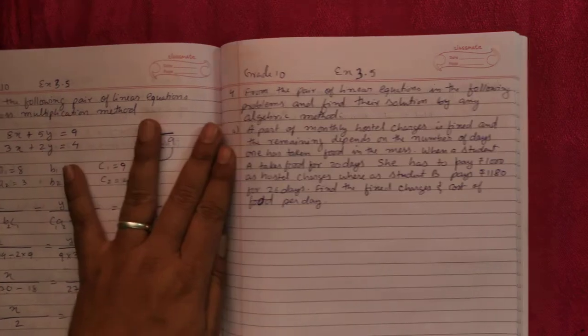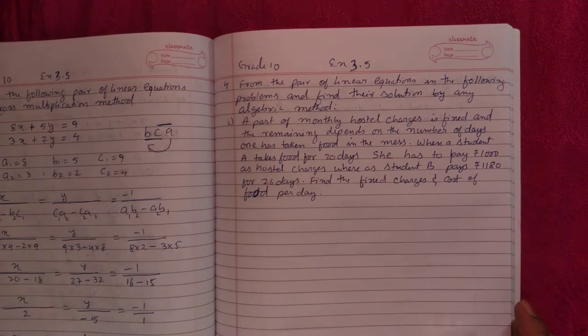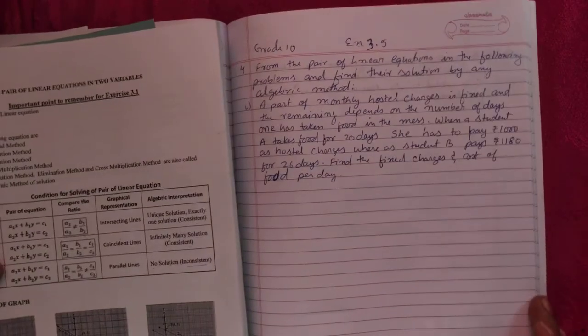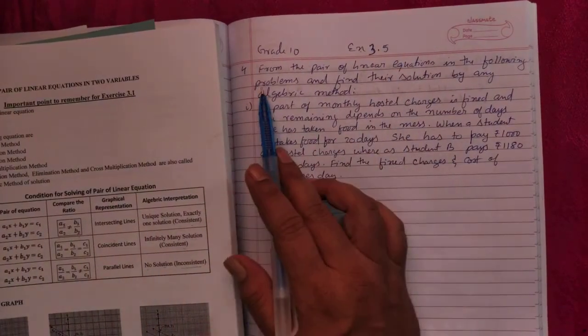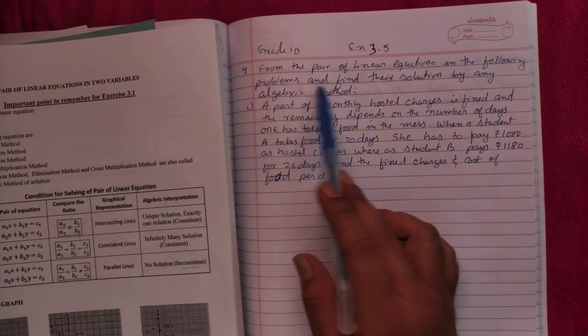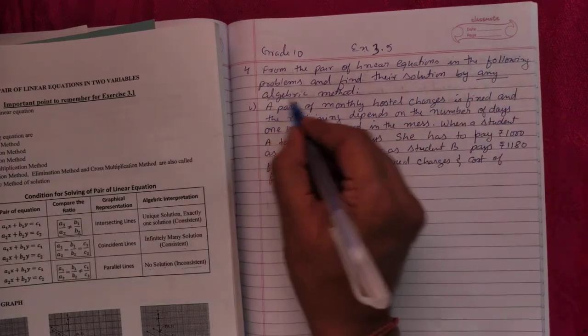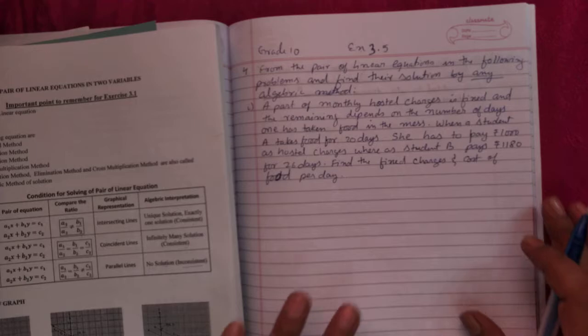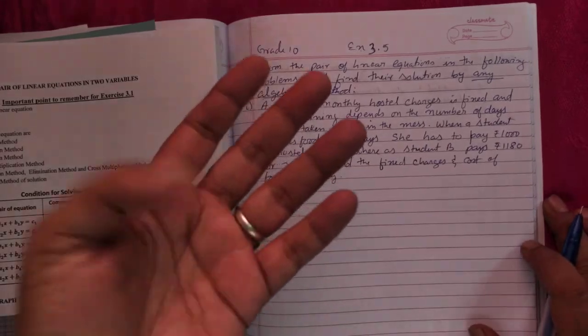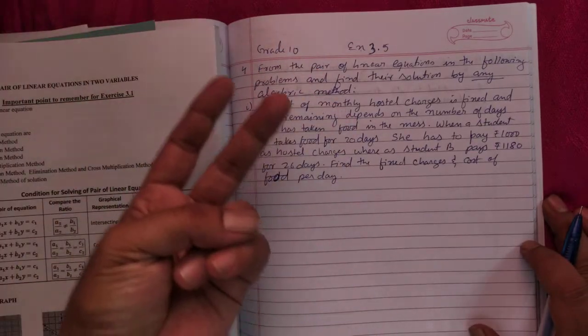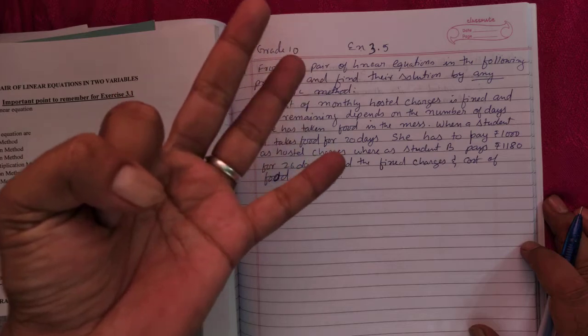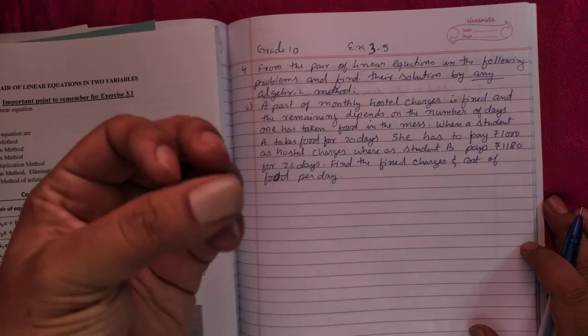Hello students of grade 10, we'll do exercise 3.5 question number 4, a word problem. They are saying to make a pair of linear equations and solve by any algebraic method. Algebraic methods are cross multiplication method, elimination method, and substitution method.